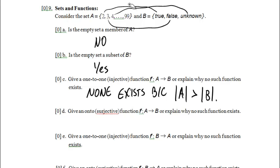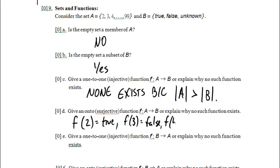Give an onto or surjective function F mapping A to B, or explain why no such function exists. So we want something that will cover all the elements in B. Everything in B will have something mapping to it. So let's define it by cases. F of two will be equal to true, and F of three will be equal to false, and F of four will be equal to unknown, and F of n will be equal to true for all other n in A. And that function will map to true, and it'll map to false, and it'll map to unknown, and we really don't care about the rest of these values. Once we've covered everything, we've got a surjective function.